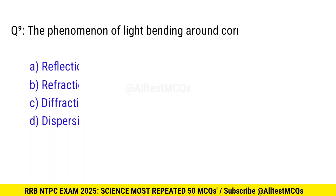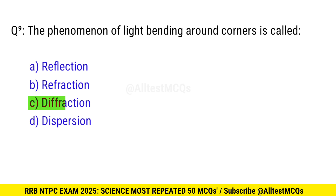Question 9. The phenomenon of light bending around a corner is called? Correct option is C, diffraction.